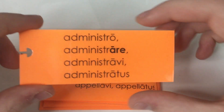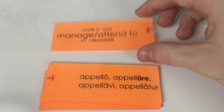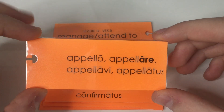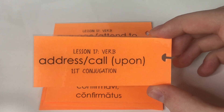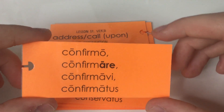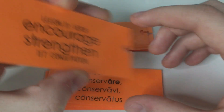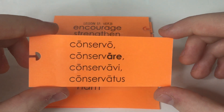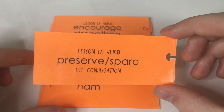Let's go back through and see if we can remember. Administro, administrare, administravi, administratus — manage or attend to. Then we have apello, appellare, appellavi, appellatus — a little bit of a tongue twister, but it means address or call upon. And then we have conformo, confirmare, confirmavi, confirmatus, which means encourage or strengthen. And then we have conservo, conservare, conservavi, conservatus — preserve or spare.